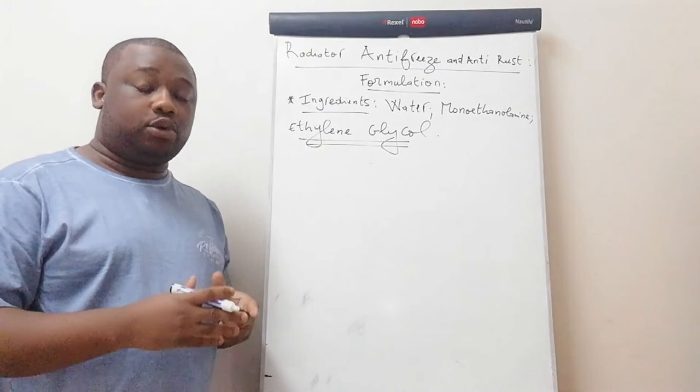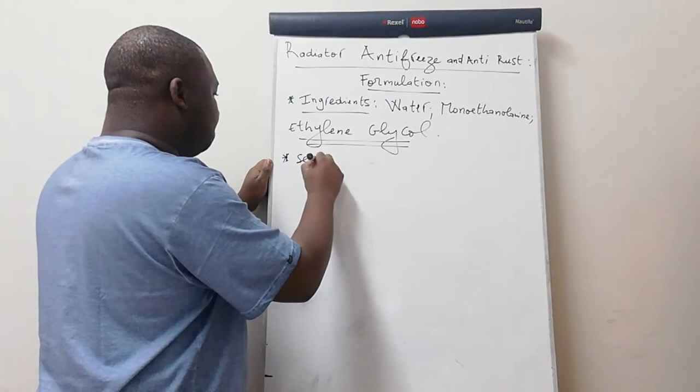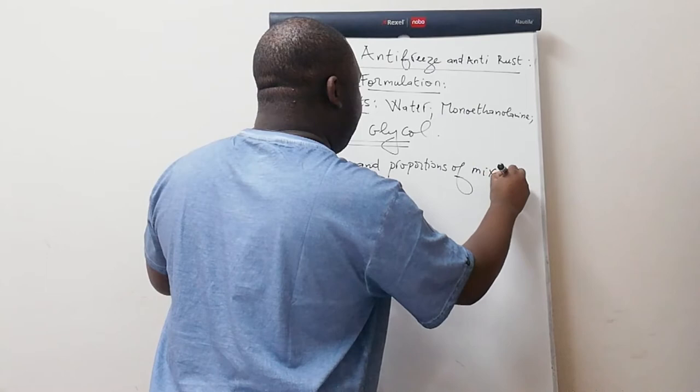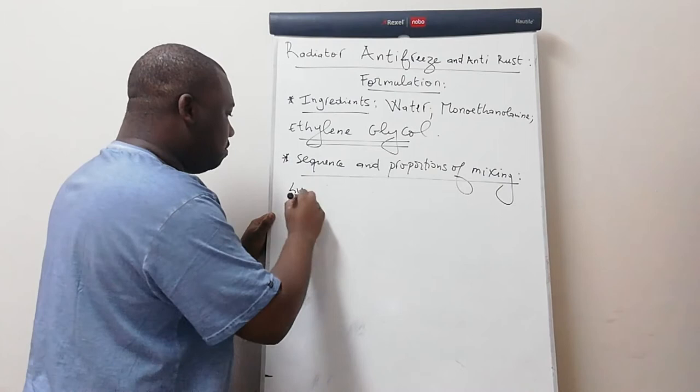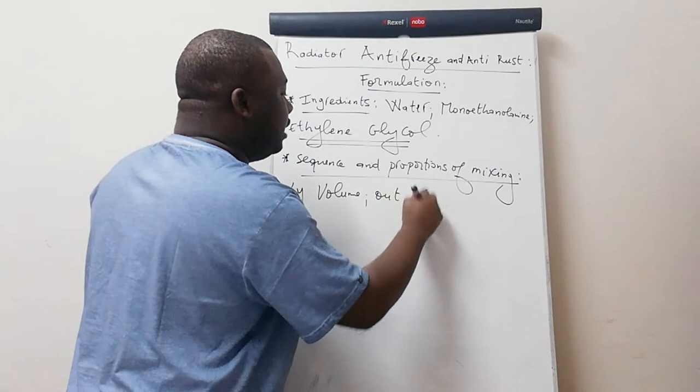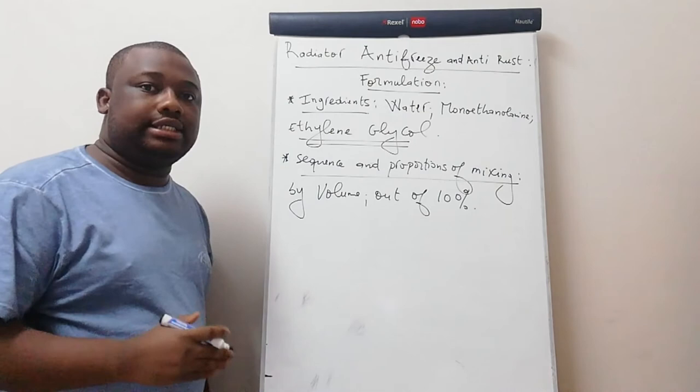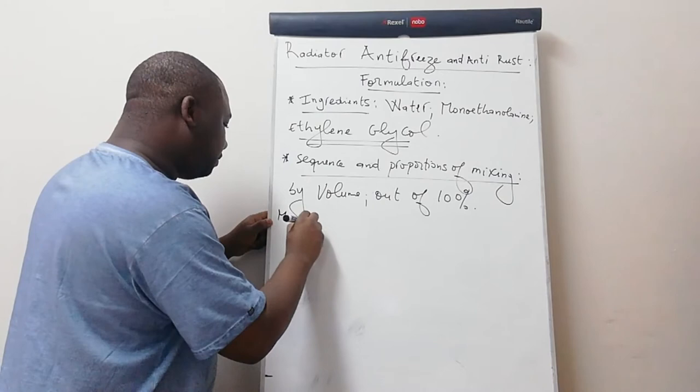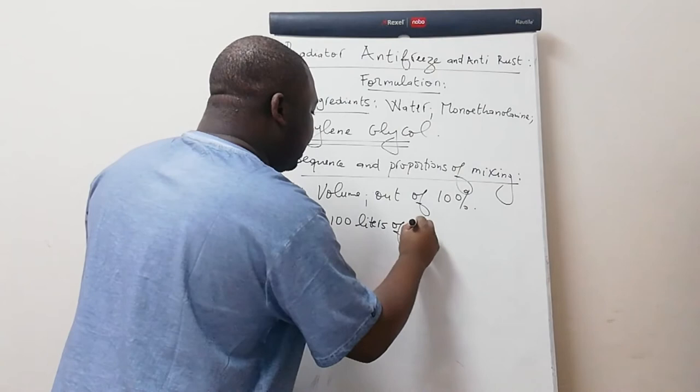Sequence and proportions of mixing. This is by volume. Let's consider a case whereby we're manufacturing 100 liters of Rajeta Anti-Freeze and Anti-Rust.